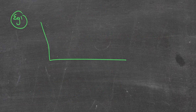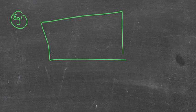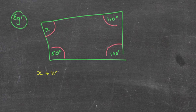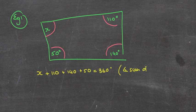So let's apply that to some questions. I'm going to start off by doing the same sort of questions that we did for the triangle. I'm going to give a quadrilateral with angles: 50 degrees, x, 110 degrees, and 140 degrees — not drawn to scale. So what am I going to do? Like the last question with triangles, I'm going to add the four angles together equal to 360. So: x plus 110 plus 140 plus 50 equals 360 degrees. The reasoning is: angle sum of a quadrilateral equals 360 degrees.